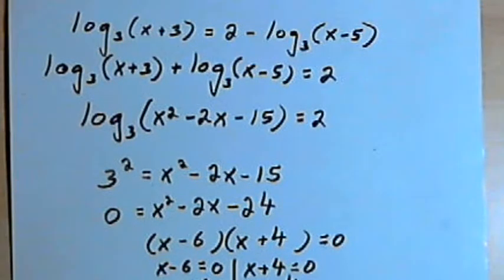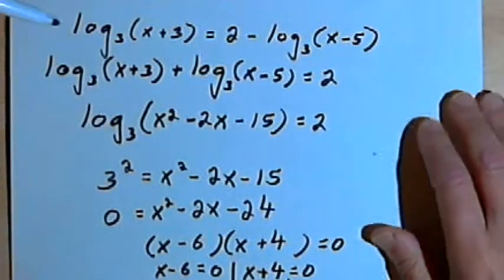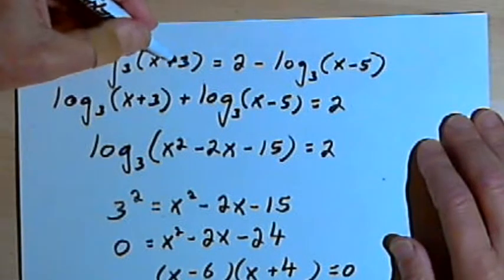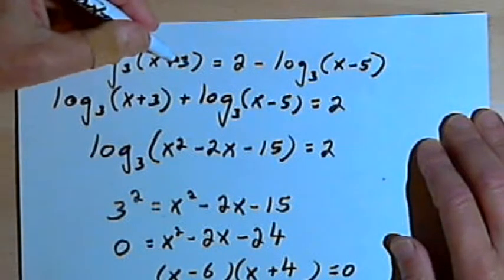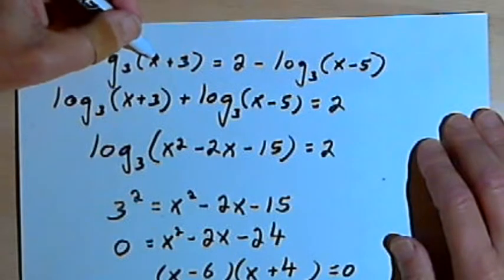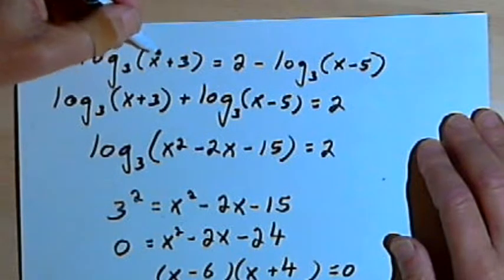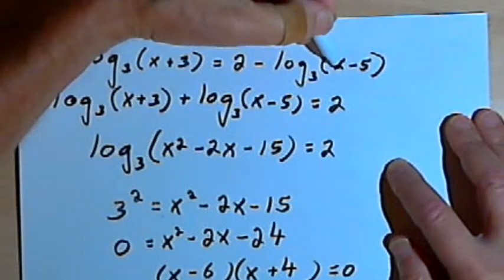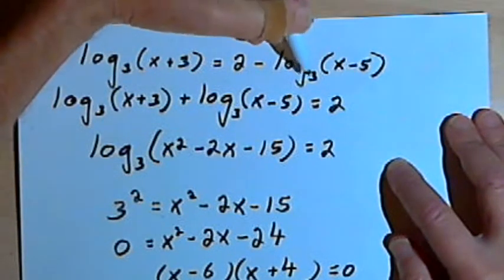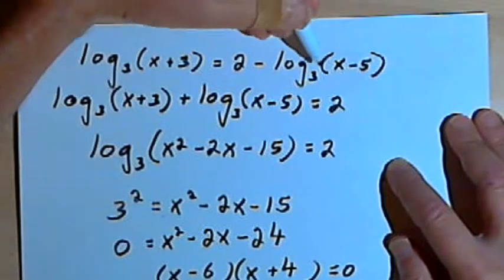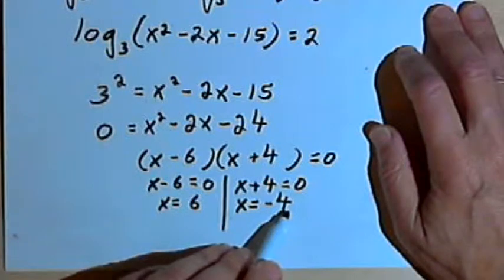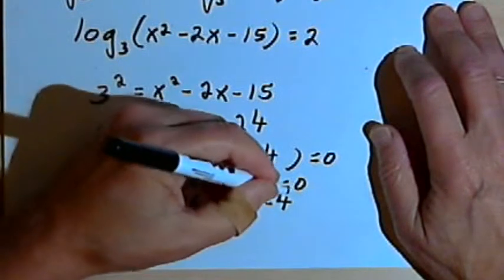Let's look at what happens if we make x equal to negative 4. Then I've got the log base 3 of negative 4 plus 3. Well negative 4 plus 3 is negative 1, and we can't take the log of a negative number. The same thing happens with this x minus 5. That would be the log base 3 of negative 4 minus 5 or the log base 3 of negative 9. So this x equals negative 4 is an extraneous answer. We can't use that one.